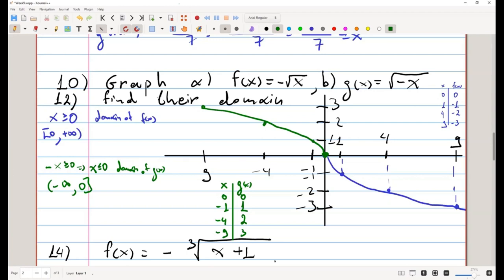So, we would see that minus square root of x is a reflection around the x-axis of the function square root of x, which we know how to graph. Square root of minus x is a reflection around the y-axis of the function square root of x. I guess we could graph them that way as well. Well, that is all for 10 and 12.